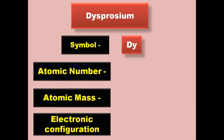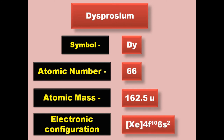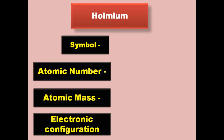Dysprosium has symbol Dy, atomic number 66, atomic mass 162.5, electronic configuration [Xe] 4f10 6s2. Dysprosium is a lanthanide and exists in solid form at room temperature.